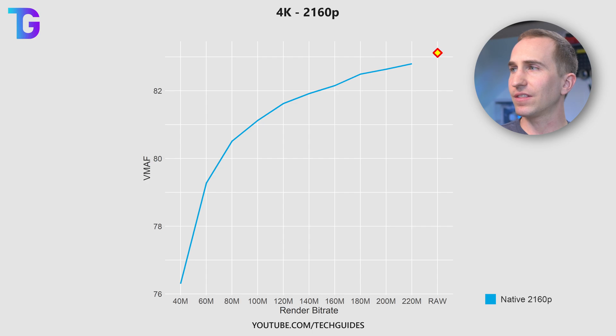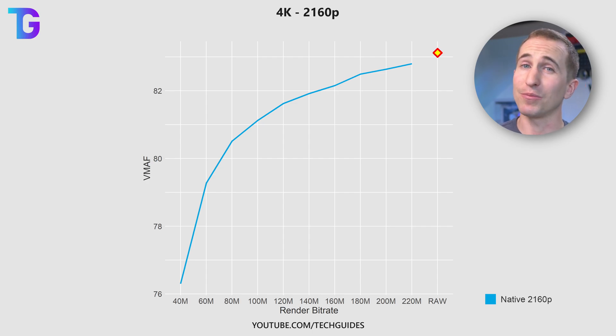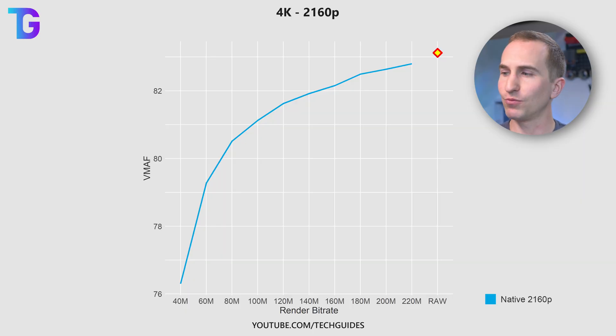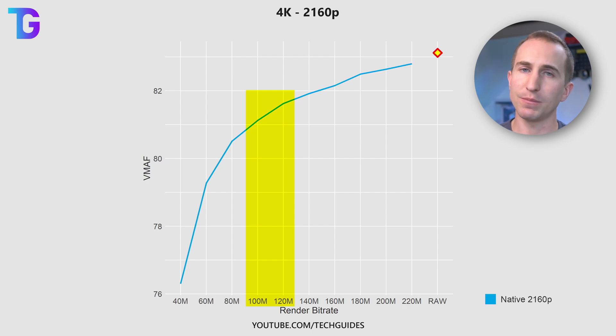As for a recommendation on render bitrate for 4K, the curve becomes more horizontal at around 120 megabits per second. However, I understand this is a pretty high bitrate and people may not want to store such large file sizes or spend the time uploading. So my recommendation is to target between 100 and 120 megabits per second for 4K footage.